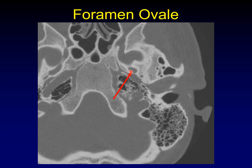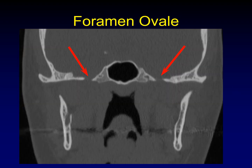As advertised, the foramen ovale when you cut it in cross-section is oval. If we look at foramen ovale in a different projection, it doesn't look so oval anymore, but this is another classic coronal image where you can see the orientation of foramen ovale out laterally. It's sending the mandibular nerve out laterally so that it can go through the mandibular foramen and out as the inferior alveolar nerve. That diagonal orientation of foramen ovale is absolutely classic.